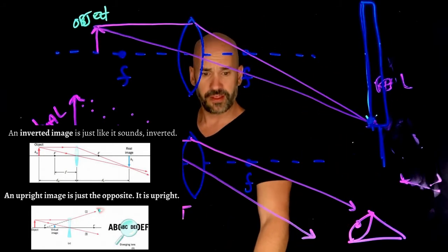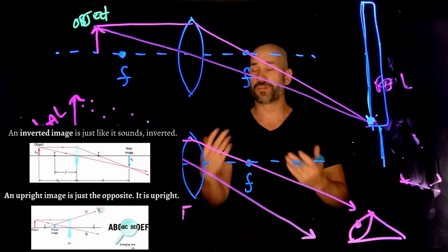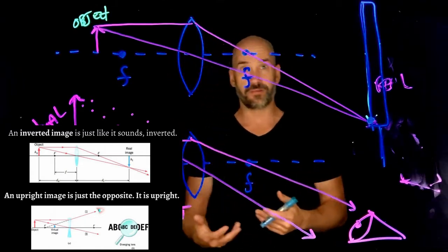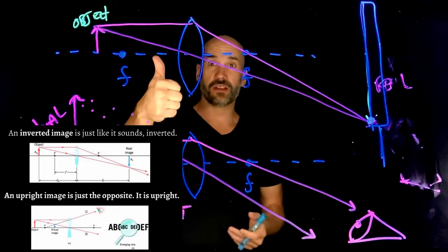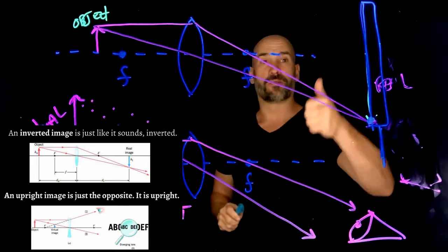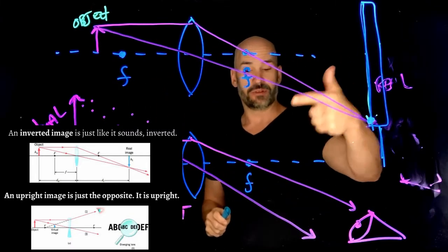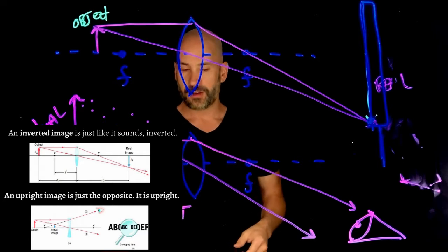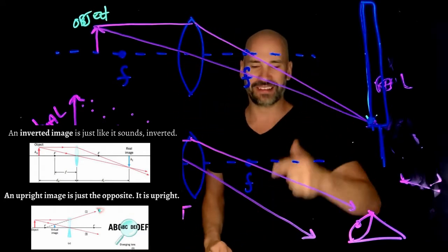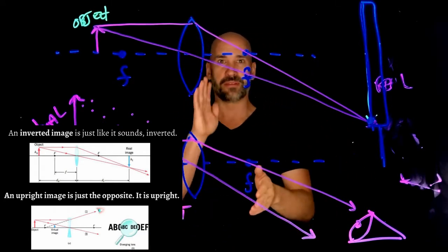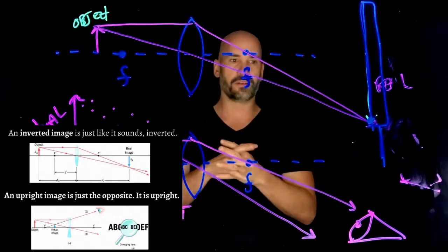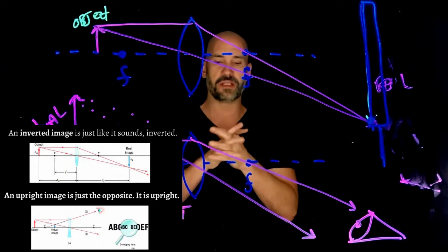So that is the overview of the different kinds of images that lenses can form. They can either form real and inverted images or virtual and upright images. Sometimes upright or erect, textbooks will use those interchangeably.